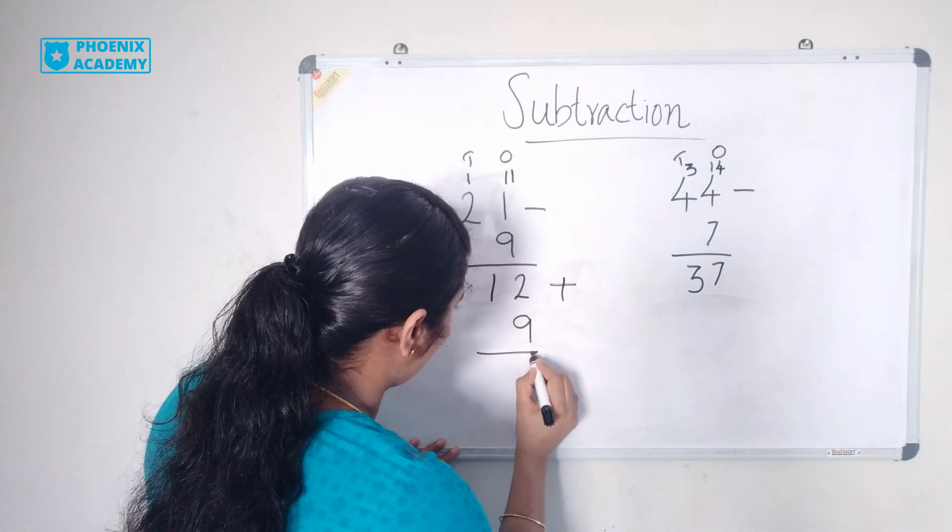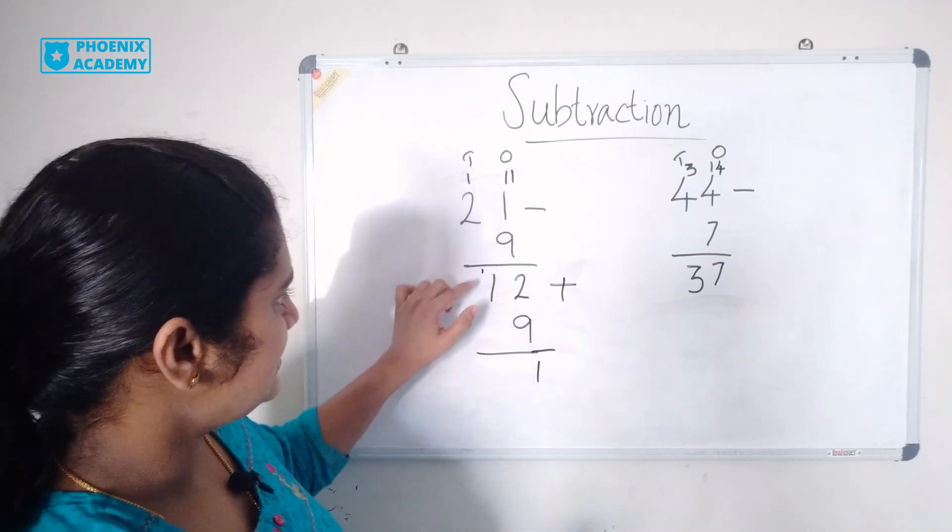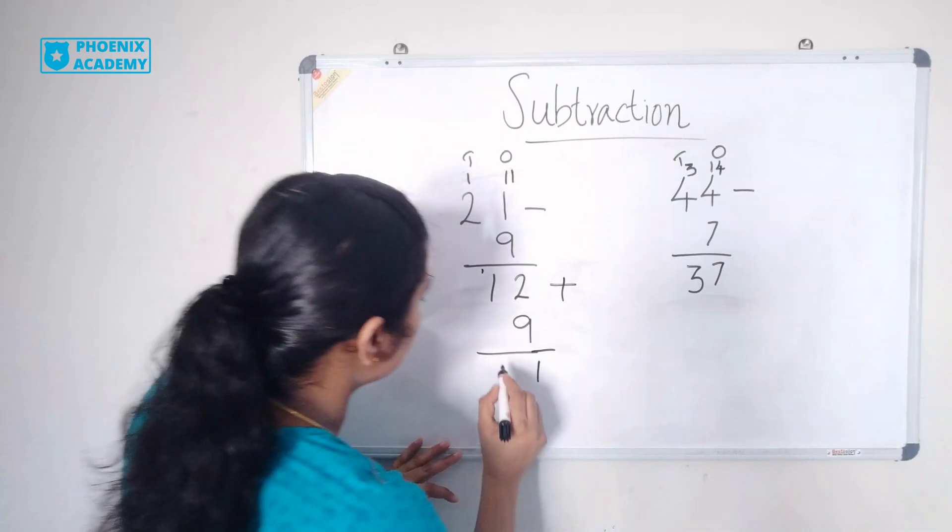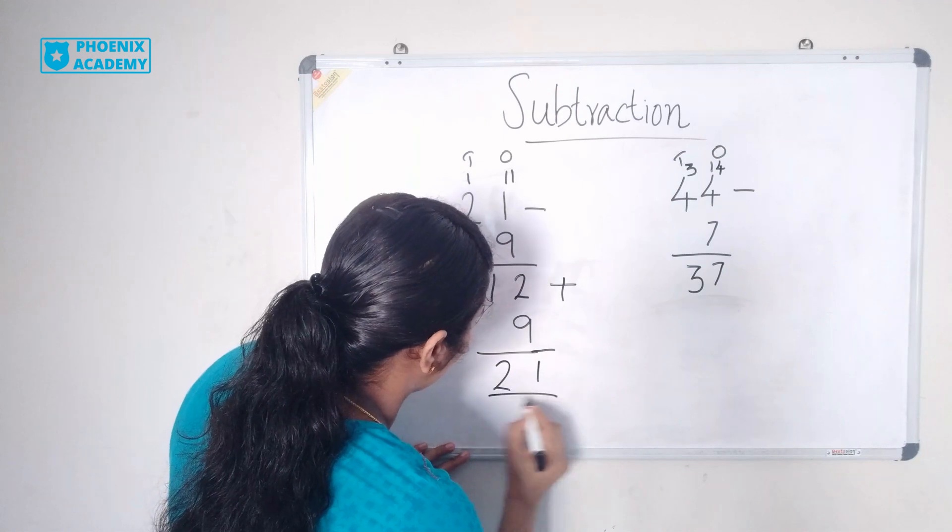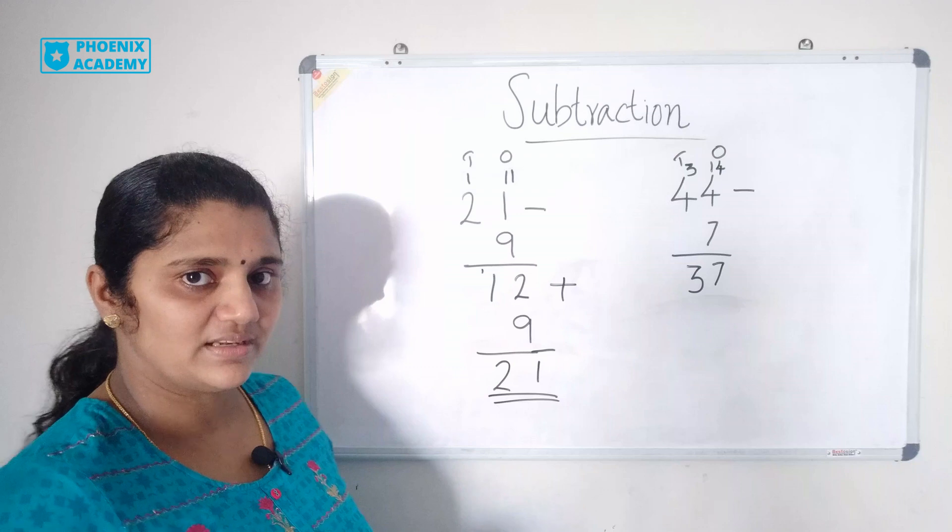We carry forward 1 once here. Let's add tens. 1 plus 1 is 2. So we got the bigger number. So our answer is correct.